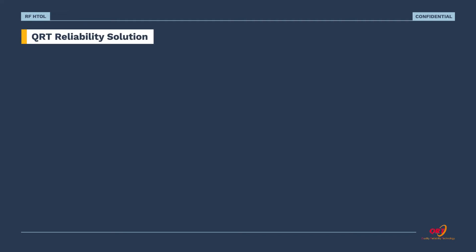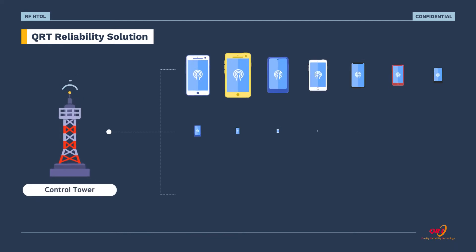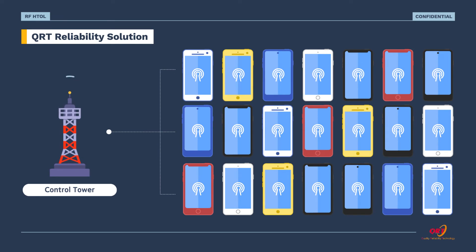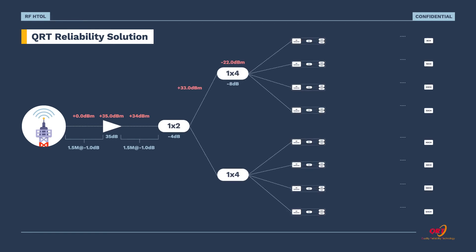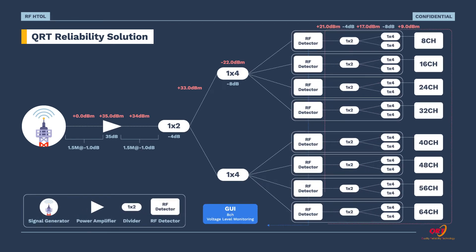So how is RF-HTOL designed? For instance, let's look at the real-life model of smartphones. Here we have a control tower throwing out all the signals to numerous cell phone users within the range. In order to simulate this, we would replace the signal tower with a signal generator, and each phone will be represented by the RF device for testing. When we design reliability testing, we want to make sure that the device is put under its worst conditions.